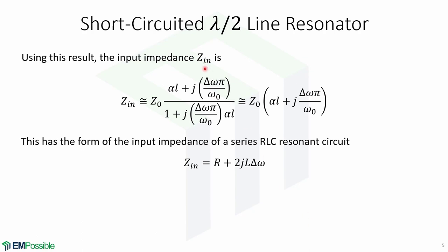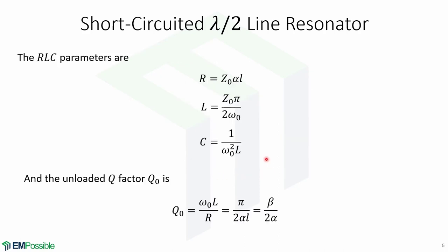Using this result, the input impedance z-in is now given by this expression. Simplifying, the input impedance is roughly equal to z0 times (alpha-L plus j*delta-omega*pi over omega-0). Notice that this expression has the form of the input impedance of a series RLC resonant circuit, given by this expression. From this, we can calculate the RLC parameters.